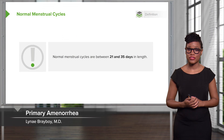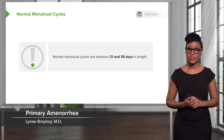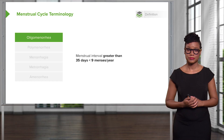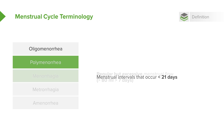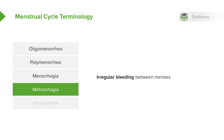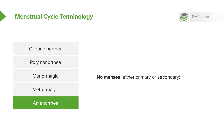Let's review what a normal menstrual cycle is like — it's between 21 and 35 days. Oligomenorrhea means periods that are greater than every 35 days apart, or less than 9 menstrual cycles per year. Polymenorrhea means periods come too frequently, with less than 21 days in the intermenstrual interval. Menorrhagia means too much flow, greater than 80 milliliters in 7 days. Metrorrhagia means irregular bleeding between menses. And amenorrhea means no menses — either primary or secondary.